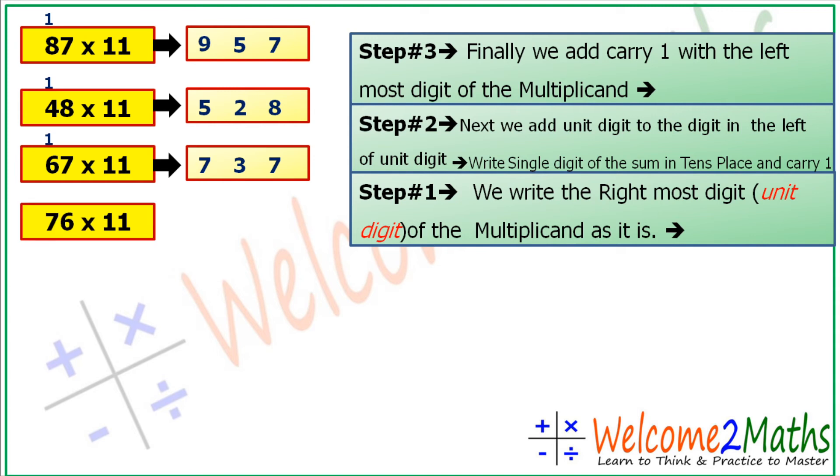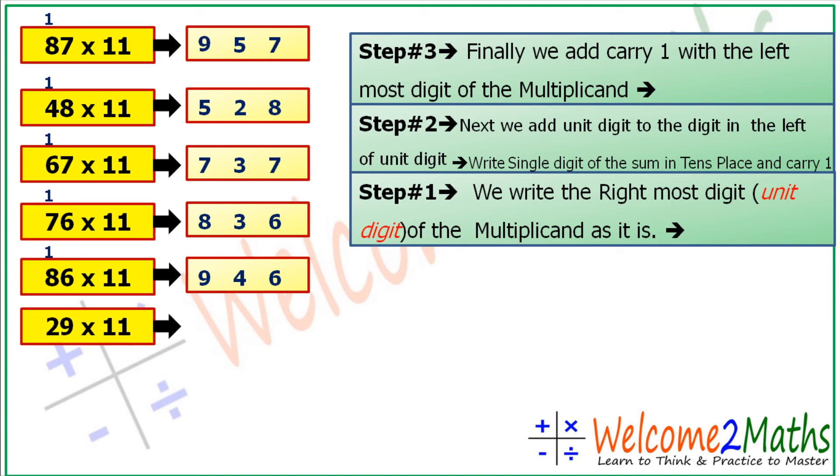Then 76 into 11. At first 6, then 7 plus 6 is 13 and 1 becomes a carry. 1 plus 7 is 8. Then 86 into 11. At first the rightmost digit 6, and 8 plus 6 is 14, so let's write 4 at tens place and 1 plus 8 is 9.